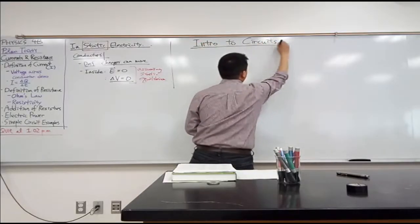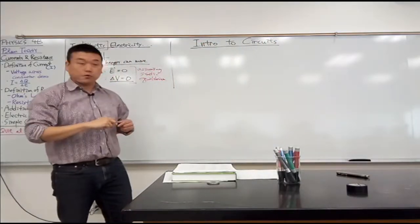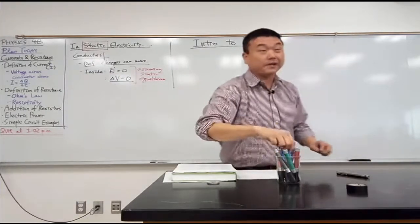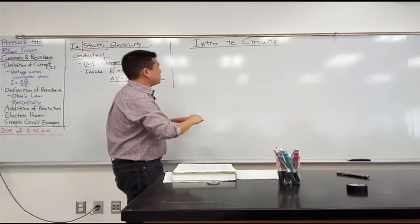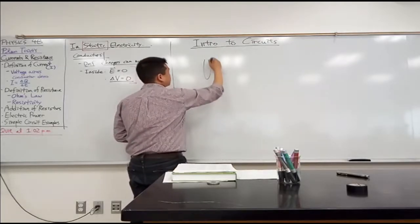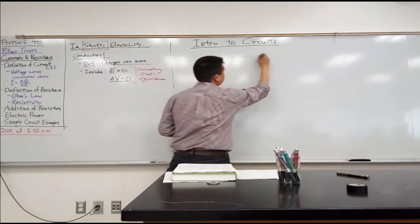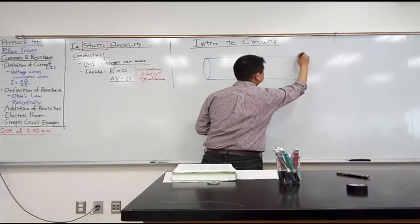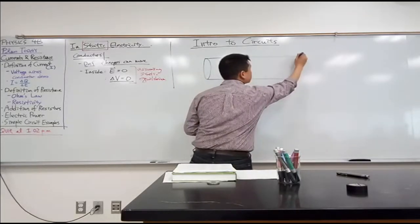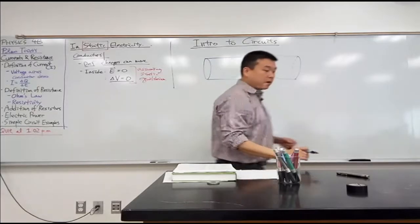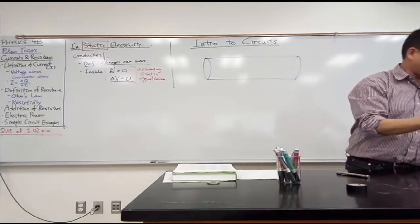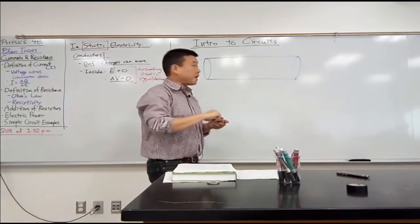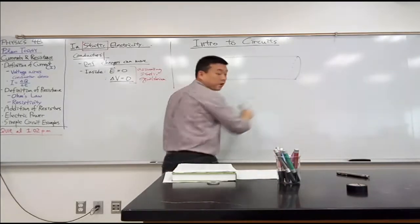Let me draw a picture of this conducting wire. Because this wire is so thin, let me draw it a little bit bigger. Imagine this sort of cylinder is a representation of the conducting wire. What we do by connecting the leads from the power supply to the conducting wire is that we are applying a voltage across this conductor.